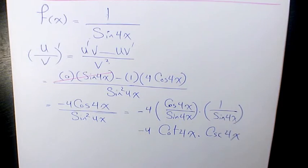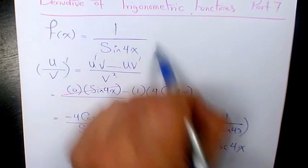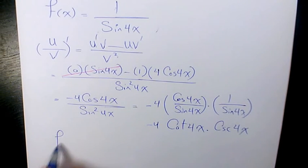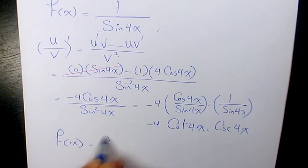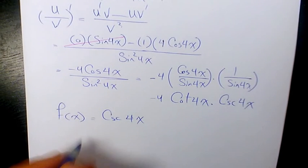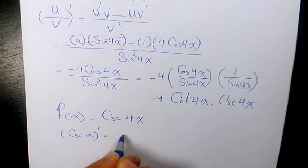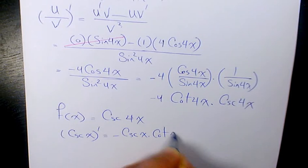Now, this is the answer. Let me do it in another way. 1 over sin 4x is the same as cosecant 4x. And we said the derivative of cosecant x is negative cosecant x cotan x.